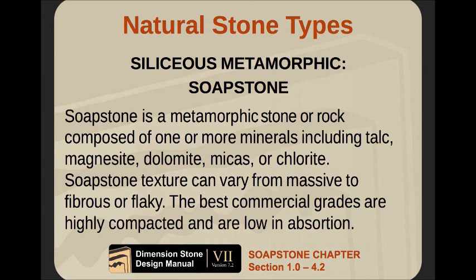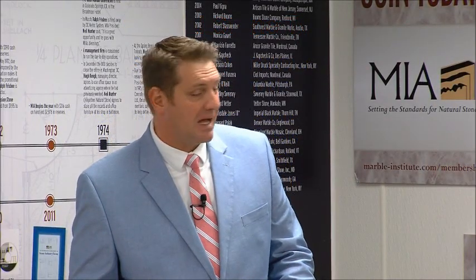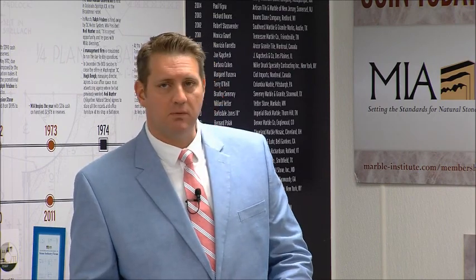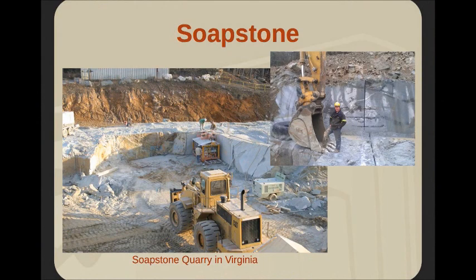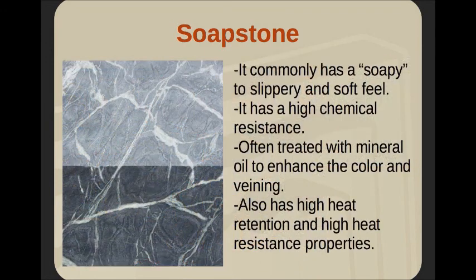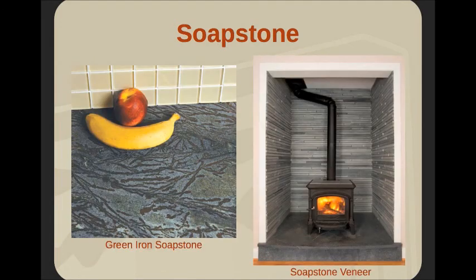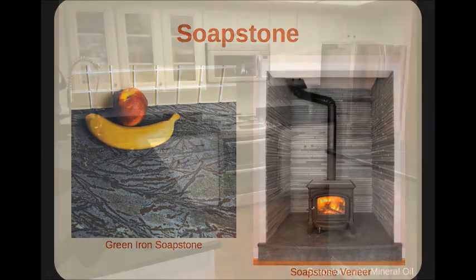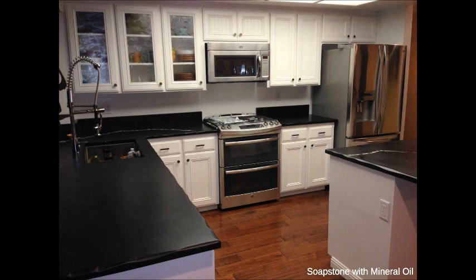Soapstone: a metamorphic rock composed of one or more minerals including talc, magnesium, dolomite, micas, and chlorite. The texture can be massive to fibrous or flaky. The best commercial grades are highly compacted and low in absorption. Often you'll see this used in laboratory applications because it is very resistant to chemical attack. It's also great for kitchens. Here's the Albemarle Quarry in Virginia. It is soft, but the upside is it's easy to repair — if you get scratches, you can easily fix them. Often seen in countertop applications treated with mineral oil, which really brings out the rich tones.